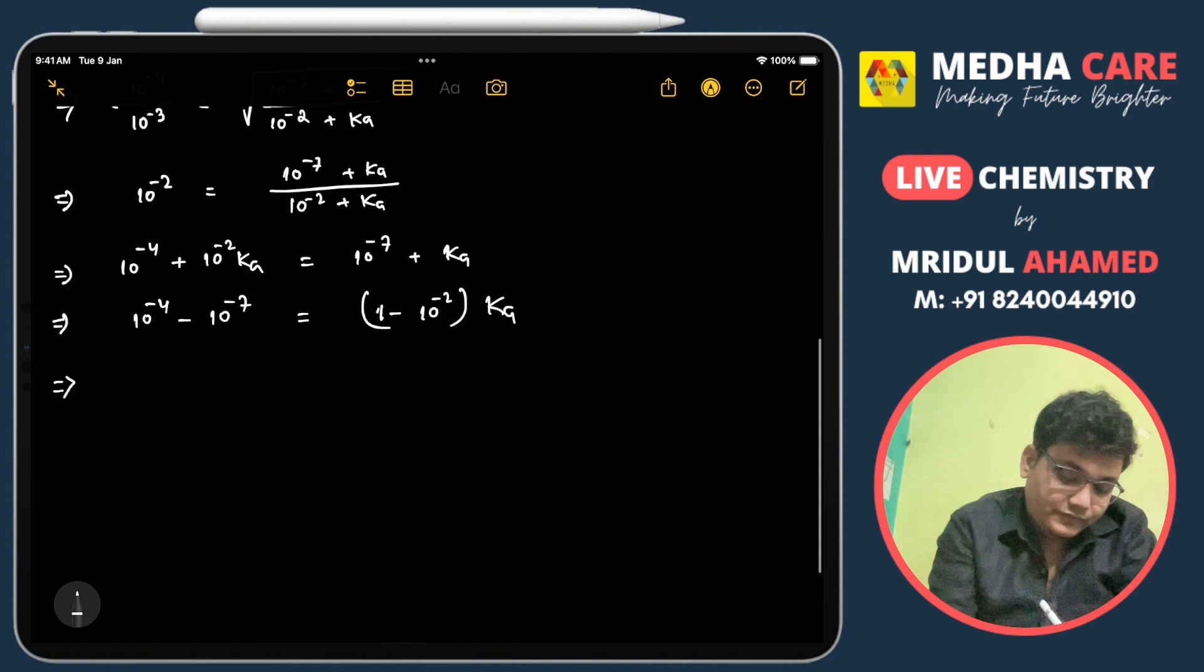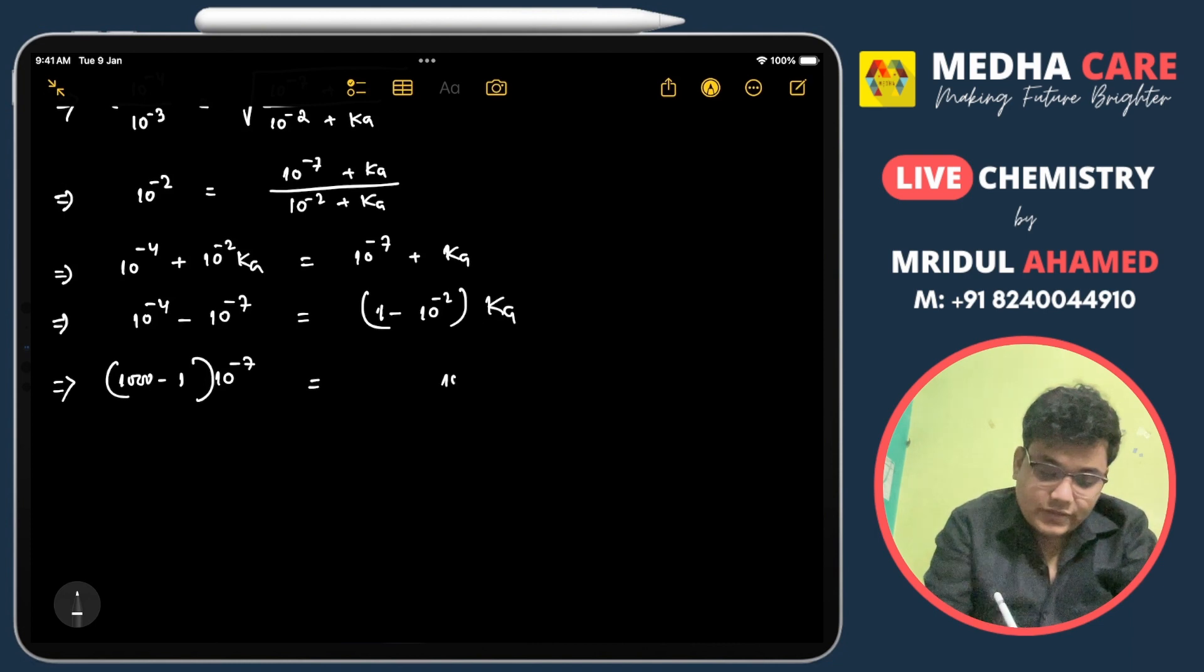If I write this, if I take common 10^-7, then I will get (1000 minus 1). Here if I take 10^-2 as common, then I will get (100 minus 1).